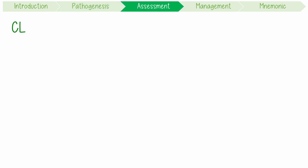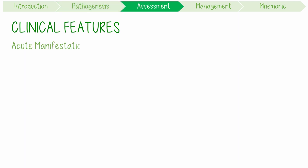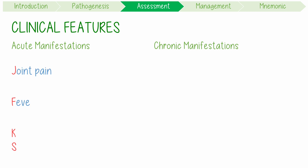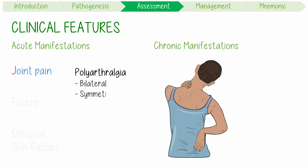In terms of clinical features, we should consider acute and chronic manifestations of the disease. Acutely, it causes our classic JFK's features: joint pain, fevers, and kumquat skin rashes. Joint involvement often presents with a polyarthralgia that's bilateral, symmetrical, and distal in distribution.